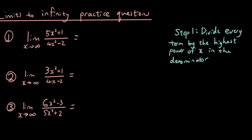So the way to do it algebraically is, step one, divide every term by the highest power of x in the denominator. What does that mean?